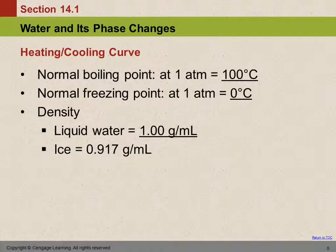So what do you need to know about this? You should know that the normal boiling point of water at one atmosphere is 100 degrees Celsius. The Celsius temperature scale was based on the boiling point and freezing point of water. The normal freezing point of water at one atmosphere is zero degrees Celsius. Those freezing and boiling temperatures will be slightly different at different atmospheric pressures — that's why we specify at one atmosphere.